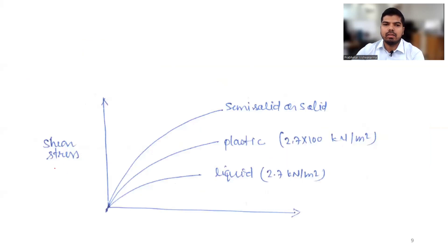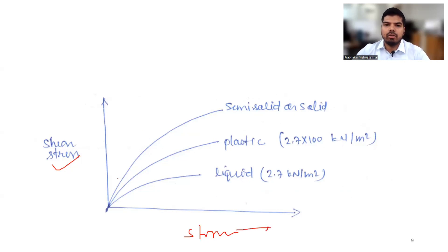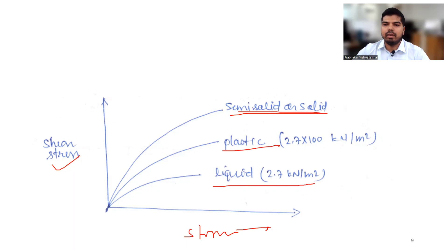The shear stress-shear strain plot shows that for semi-solid state, shear stress is higher; for plastic state, it is slightly lower; and for the liquid state, shear stress is very negligible.